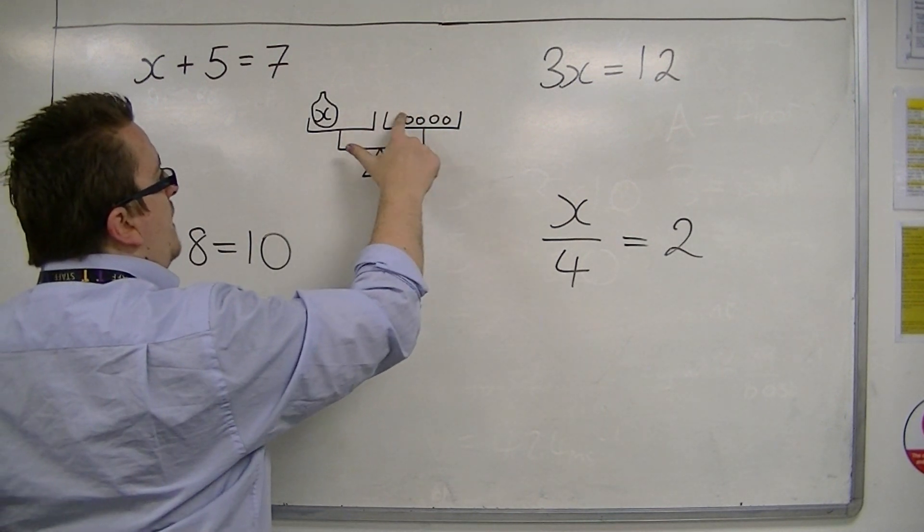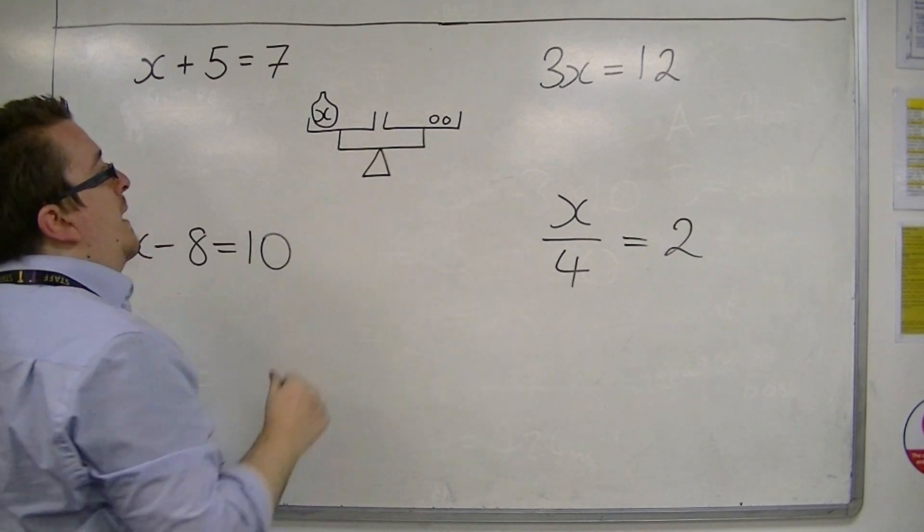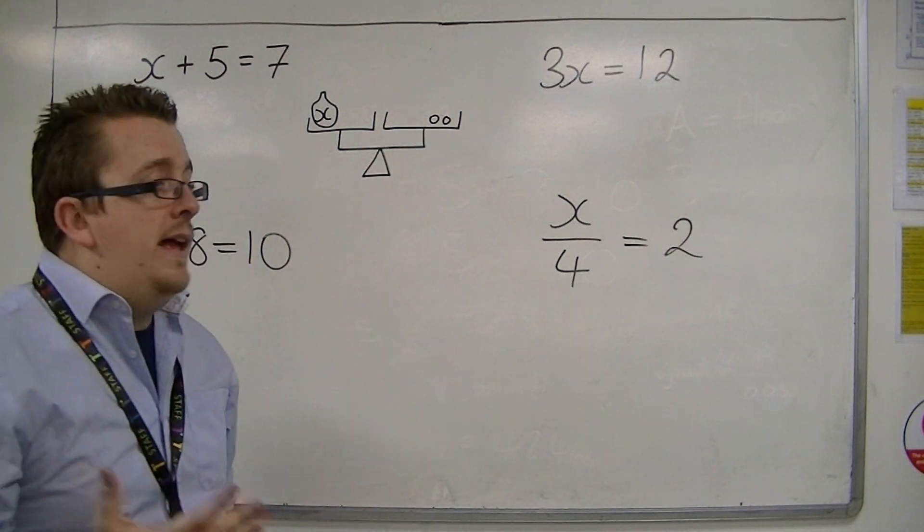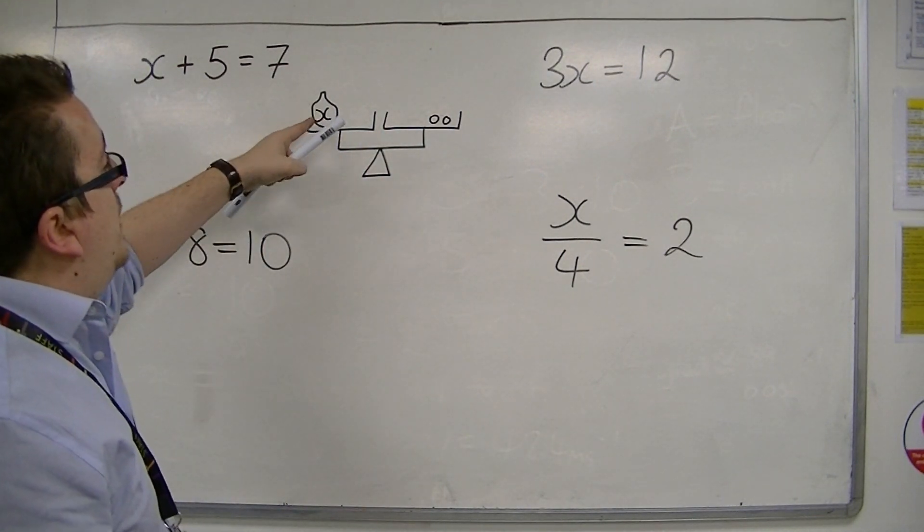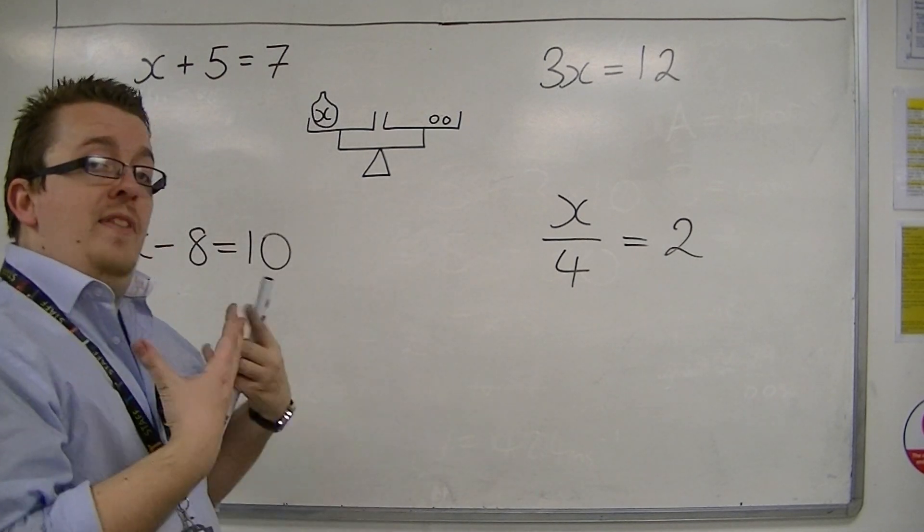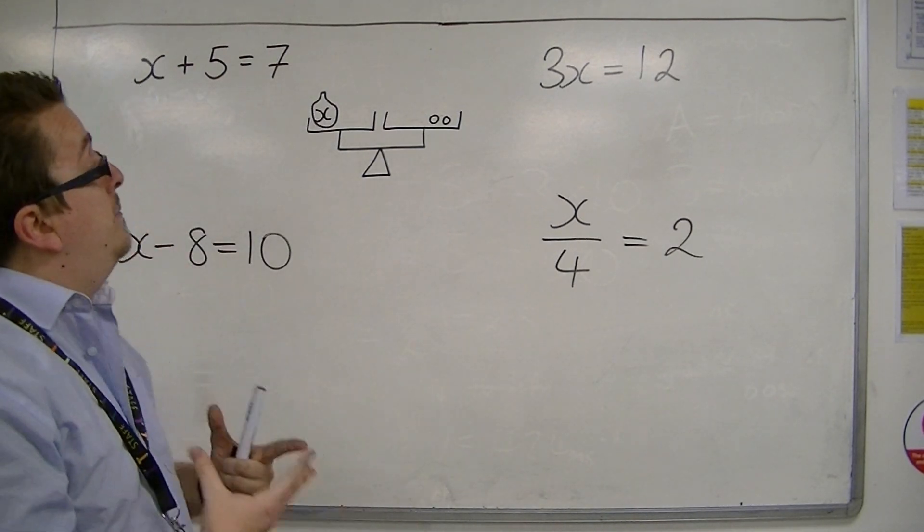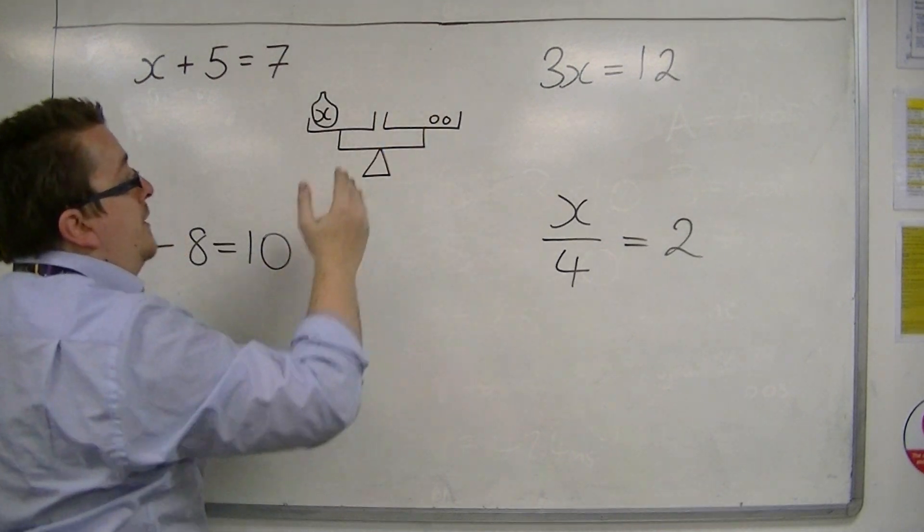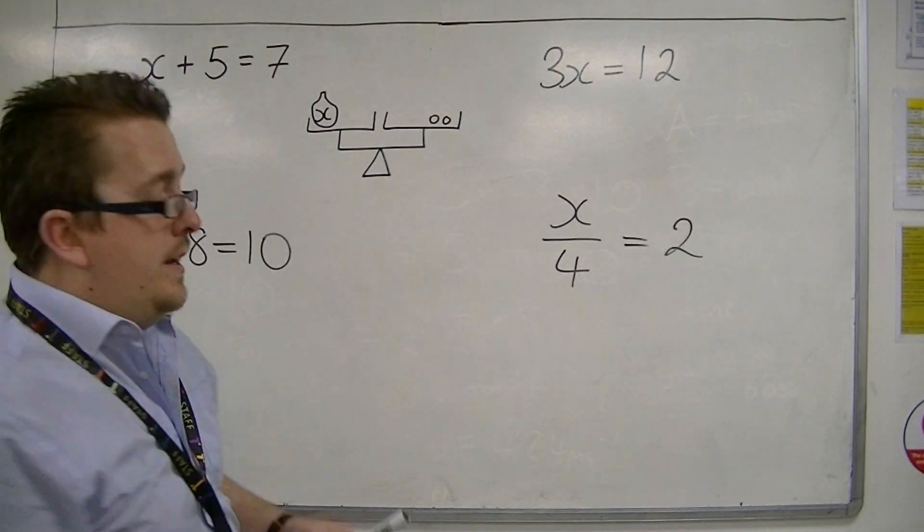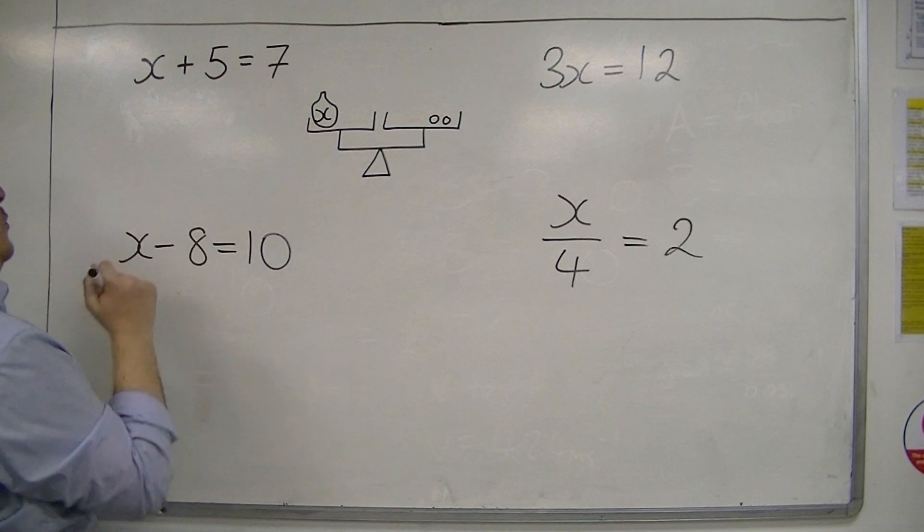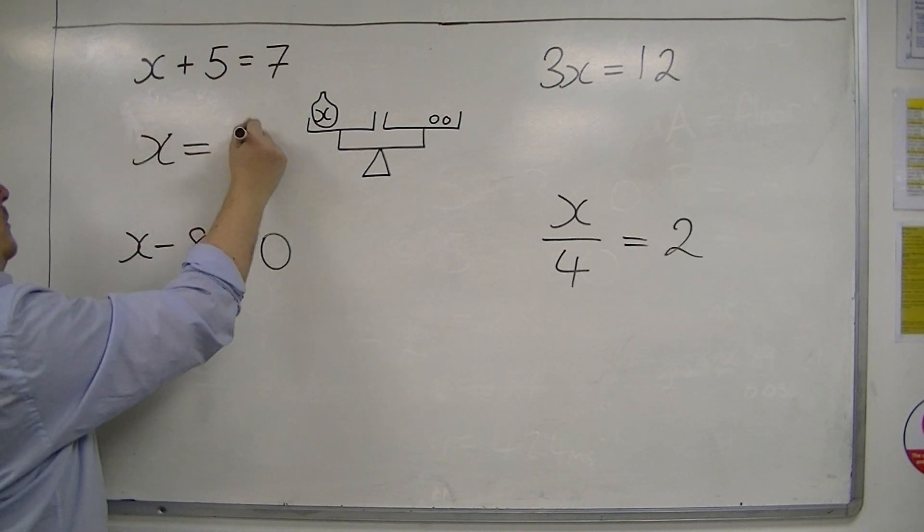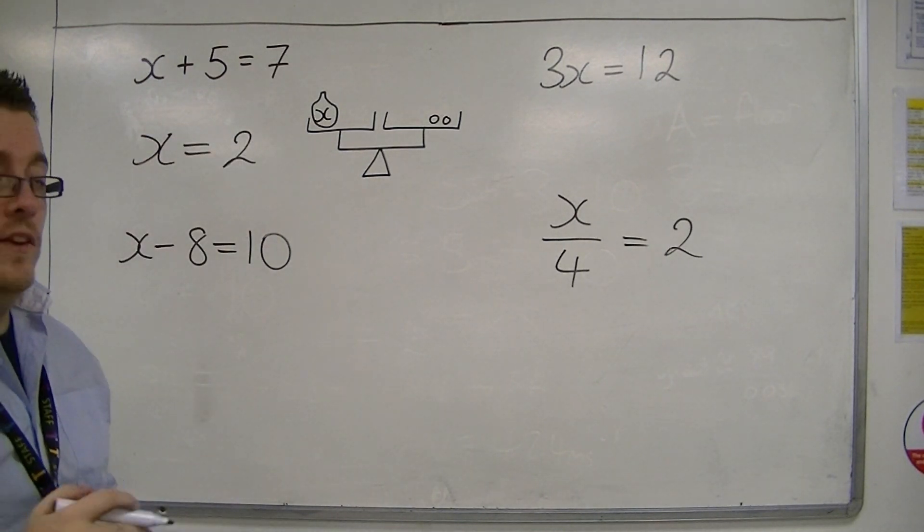Then, I'm going to take the remaining two from that side, so I take the remaining two from that side. And what I have left is that the bag is by itself, and that's really what I want. I want the bag by itself, because then I can just look at the right-hand side and think, well, that bag is equal to two bits, or just two in our case. So, x equals two.